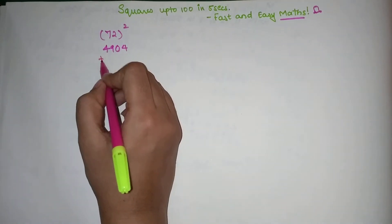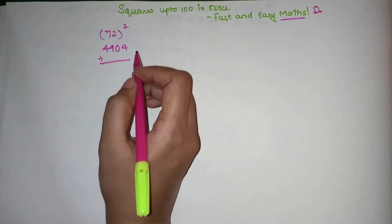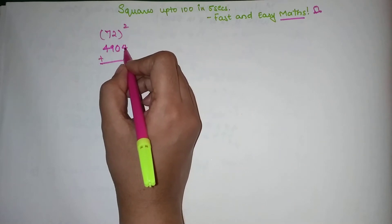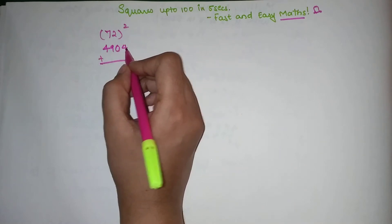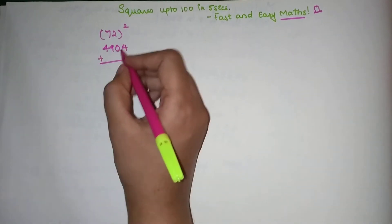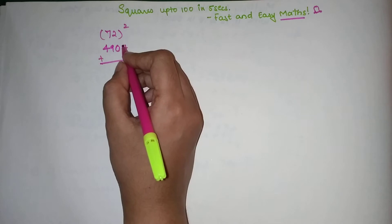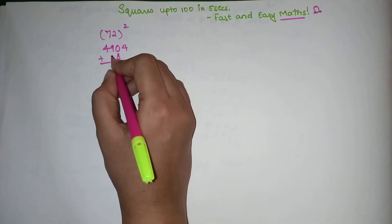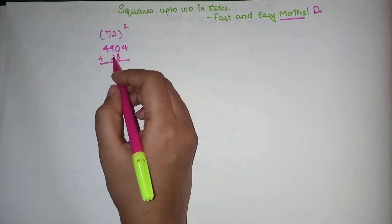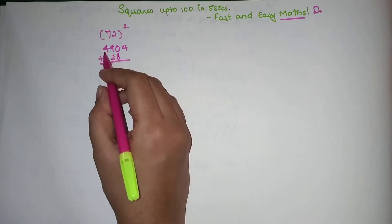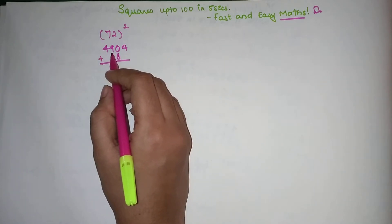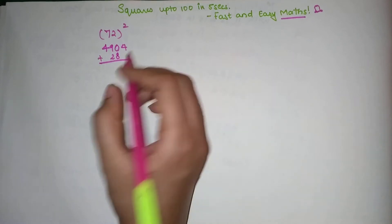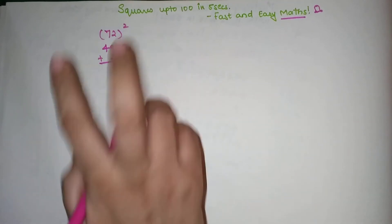Now while adding, you will add from right to left but leave the first digit. So you add 28 to 490, not to 4904. These two things are very important.